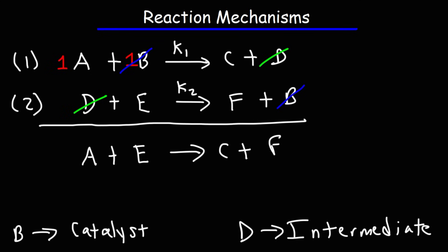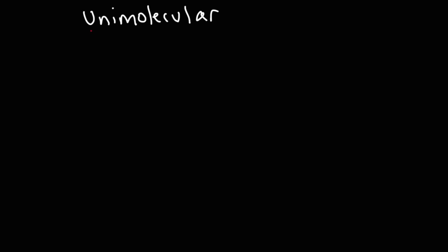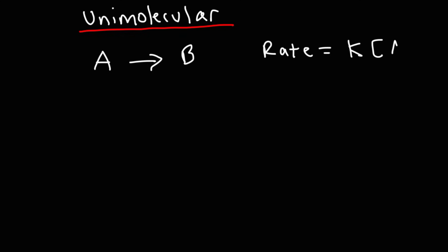Sometimes you need to determine the molecularity of each individual step in a reaction mechanism. The first term to be familiar with is a unimolecular reaction — uni means one, so we have one molecule as the reactant. A good example is A going into B. The rate law expression is rate equals K times A to the first power, and the overall order of a unimolecular reaction is first order.